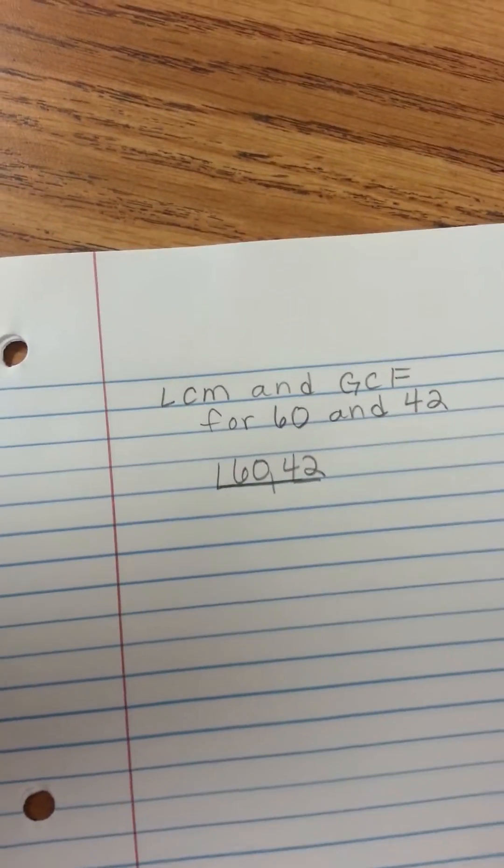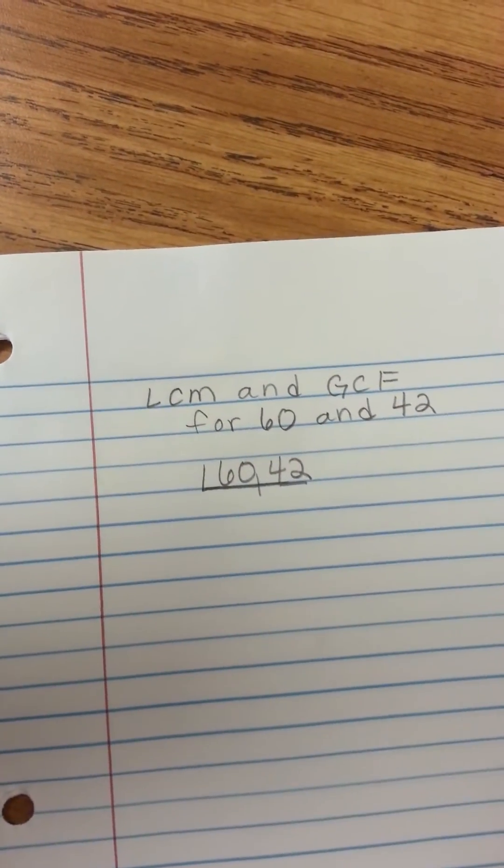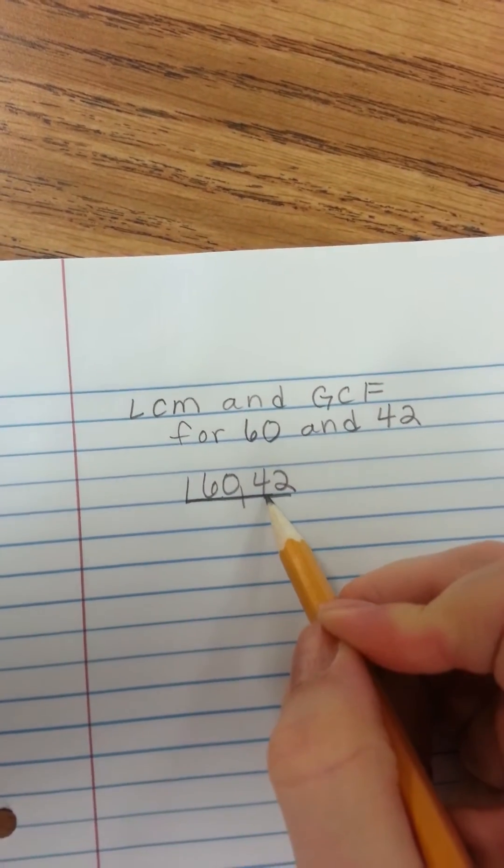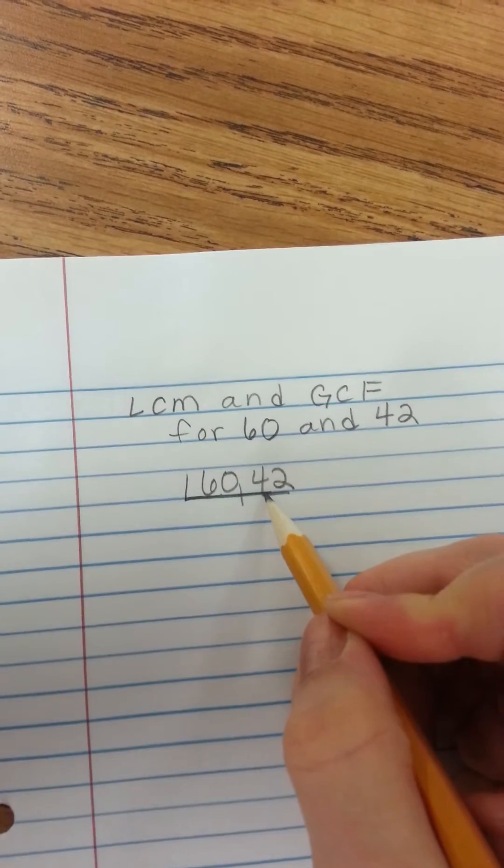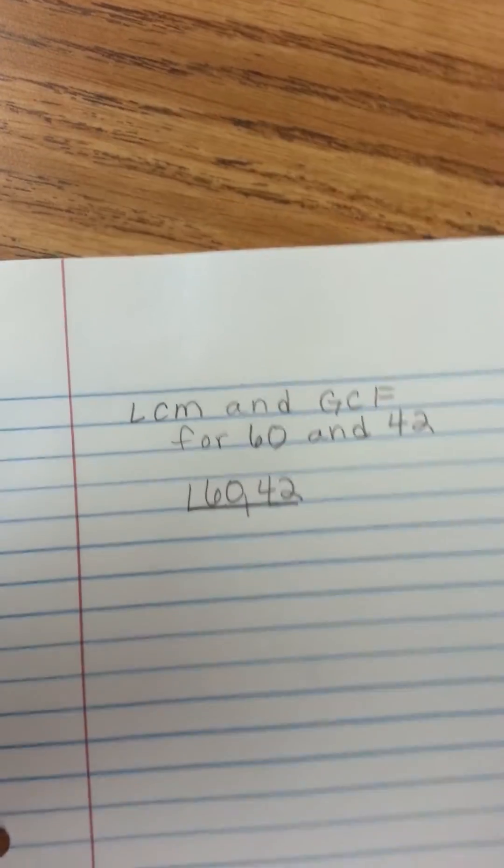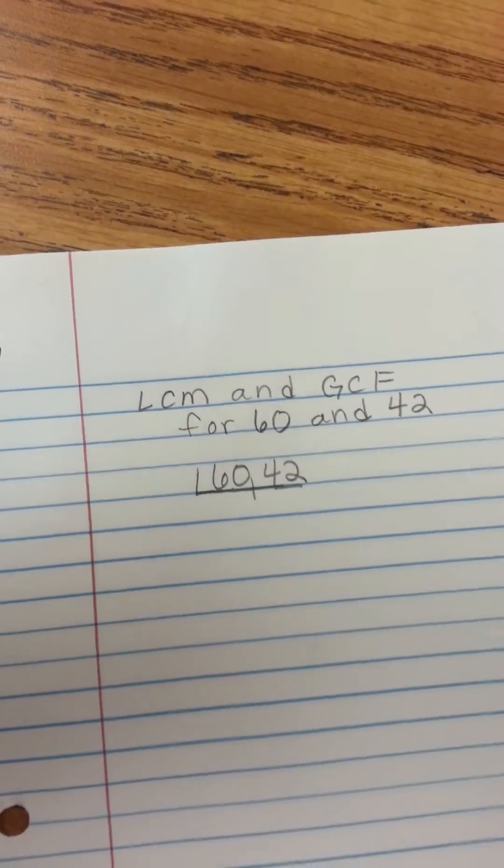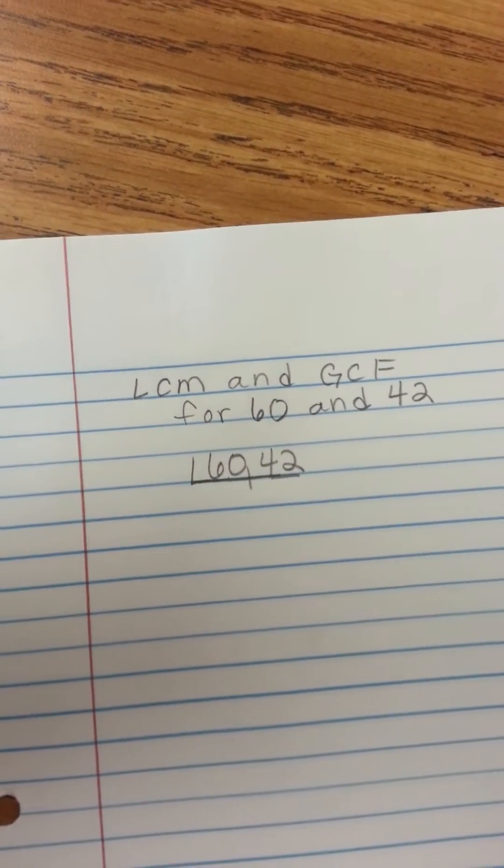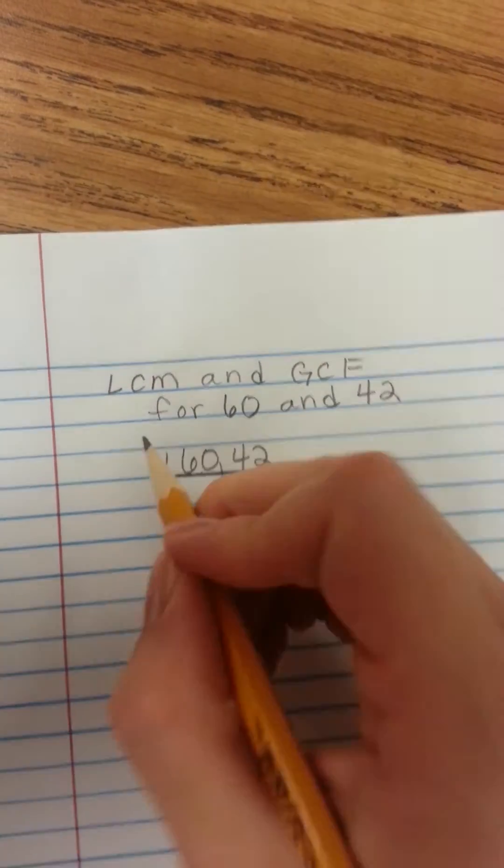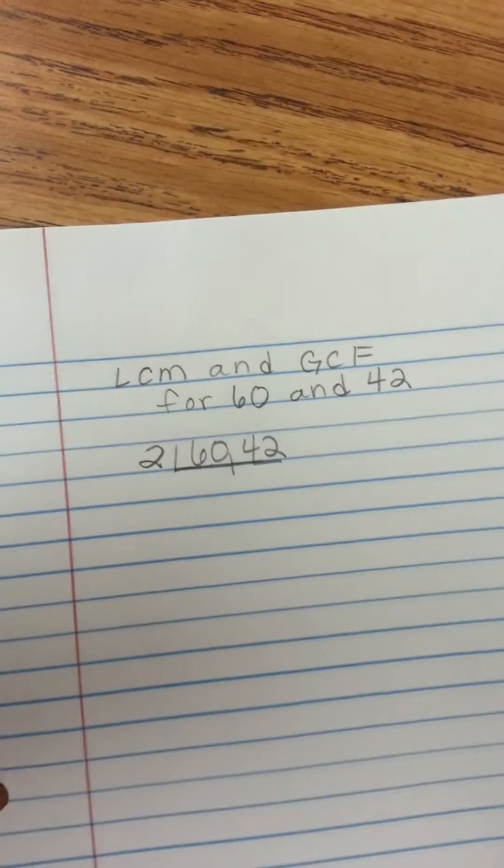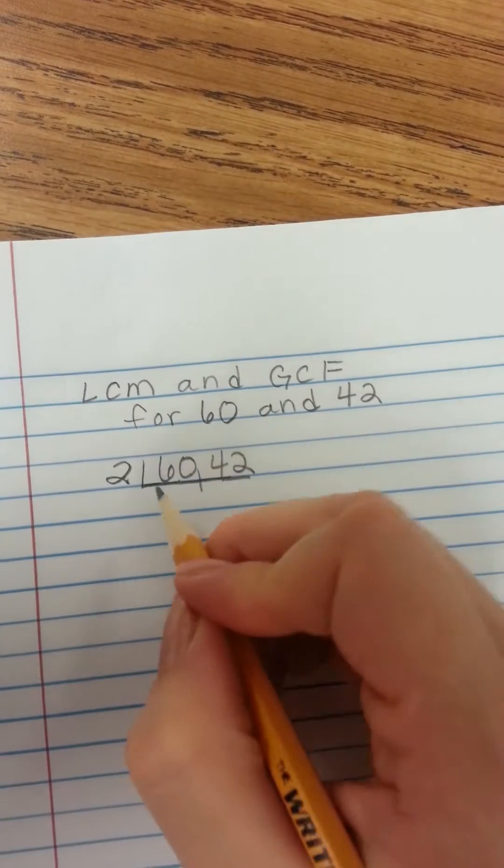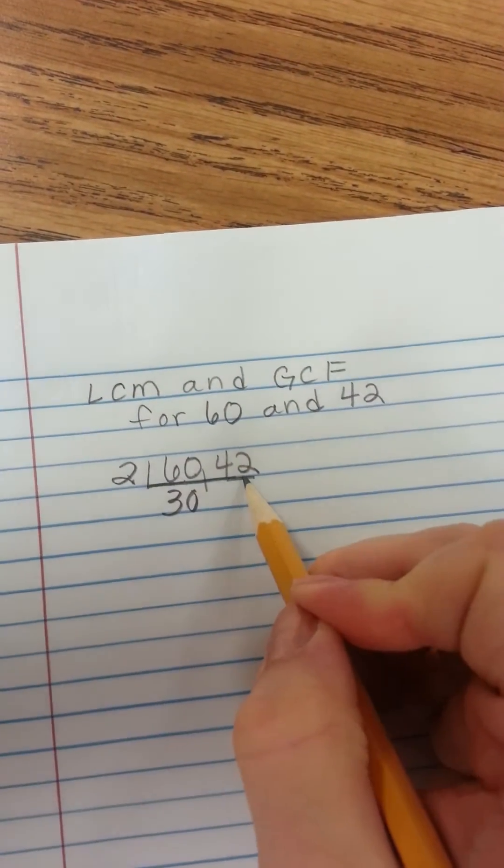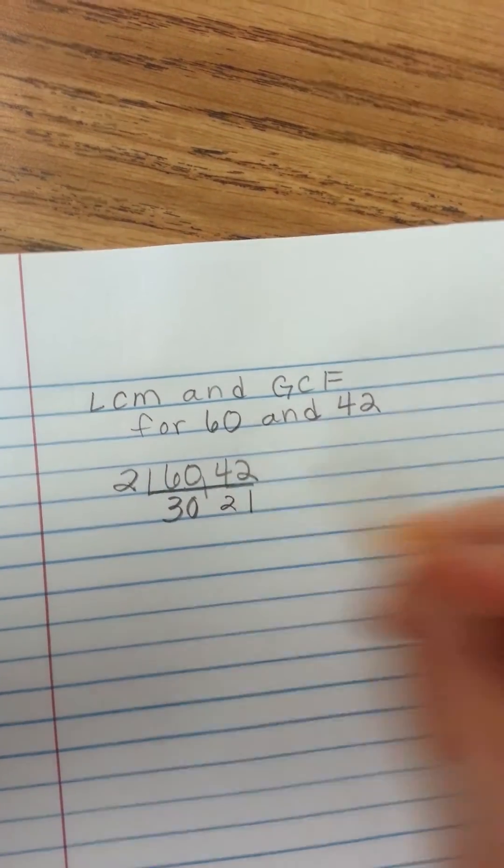Okay, I'm going to think of a factor, a number that's going to go into 60 and into 42 evenly with no remainder. So let's say that I couldn't think of anything other than 2. I know that 2 will go into 60 and 42 because they're both even numbers. So I'm going to start with 2. 2 goes into 60 30 times. 2 goes into 42 21 times.